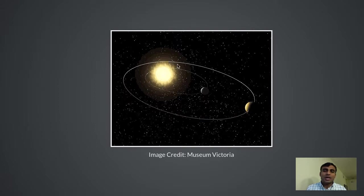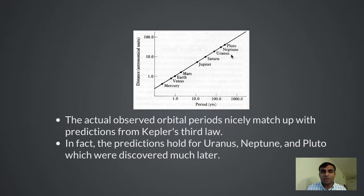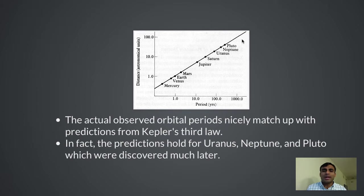Essentially, planets which are inner go faster and take much less time to circle the sun, while planets farther away take longer. This chart of predictions made by Kepler's third law shows how well they line up — and beautifully, these predictions match for Uranus, Neptune, and Pluto, which were discovered much later, after Kepler gave his third law. That's the beauty of science: a theory not only has to meet all observations to date, but also all future observations. Had those planets been out of sync, we would have had to throw out this law — but it matches predictions very well.